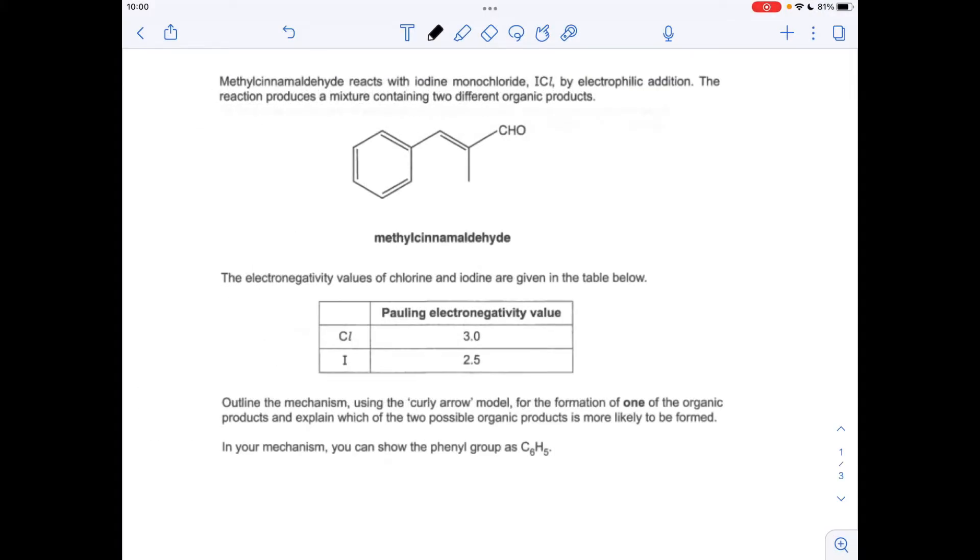Okay, so a slightly different electrophilic addition question here, because normally you would react the alkene with either a halogen or a hydrogen halide. This time it's a mixed halogen ICL.